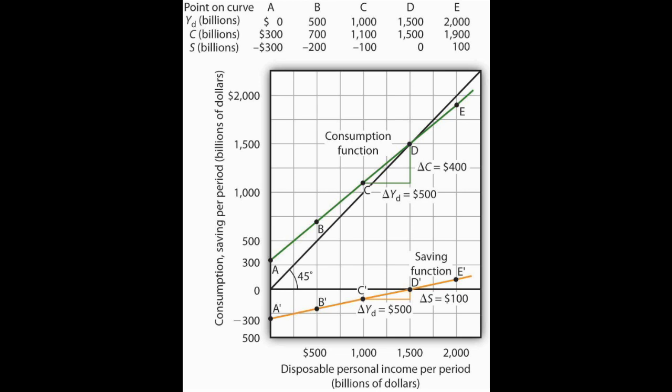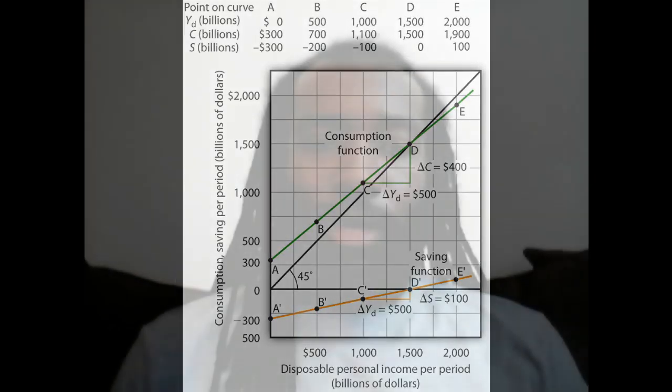You can investigate the same question with savings, which are the portion of disposable personal income not used on consumption. The saving function is similar to the consumption function, except this equation describes the relationship between savings and disposable personal income. Similarly, the marginal propensity to save, or MPS, is the ratio of the change in savings to the change in disposable personal income.